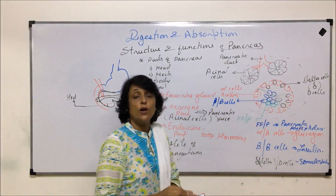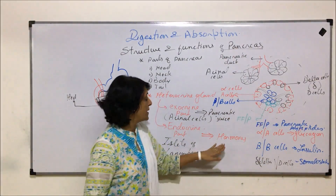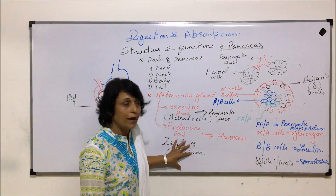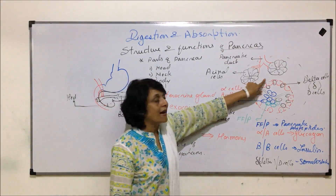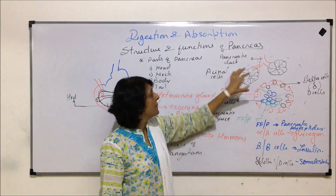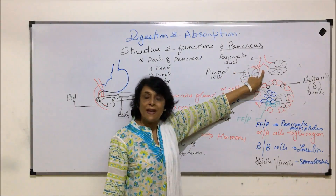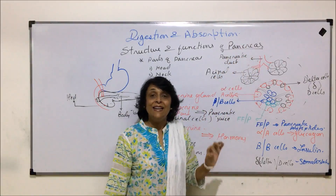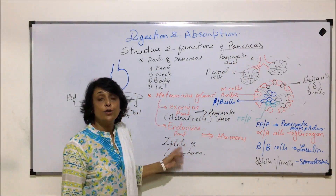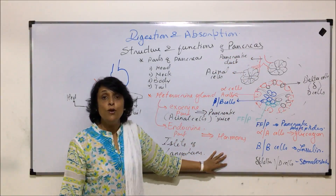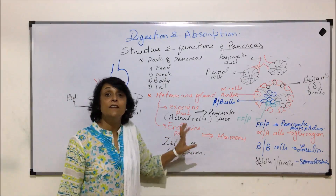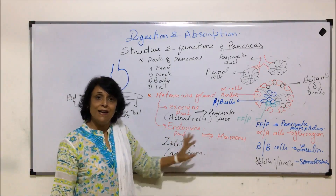So there are four types of cells present in the islets of Langerhans, which form the endocrine part. The exocrine part is made up of acinar cells found in clusters; they pour pancreatic juice into ducts. The endocrine part pours its secretion directly into the blood, because endocrine glands are ductless.